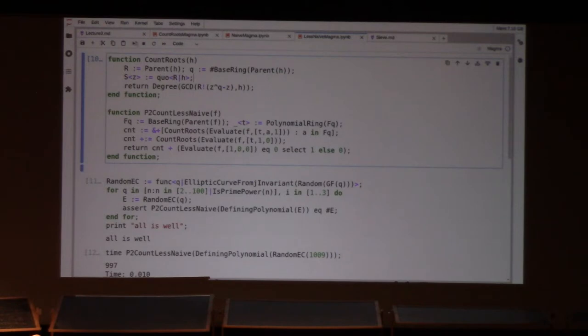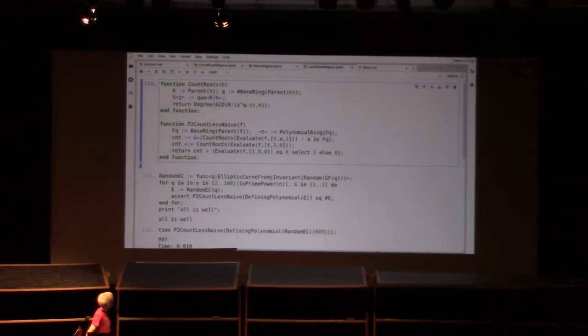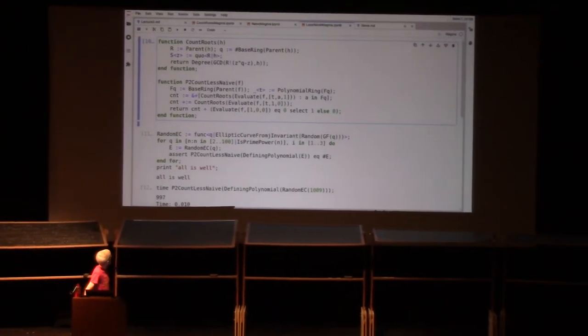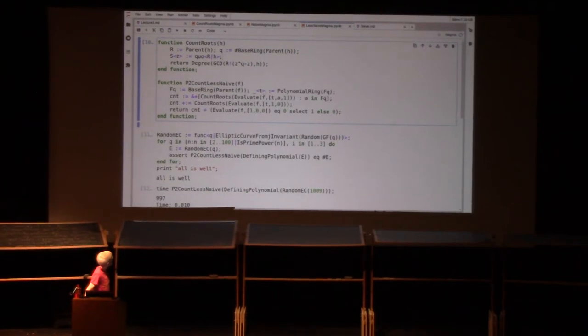All right. So all I've done here is I copied the count roots function. This is just a cut and paste of the other one. In general, you probably want to write this out to a file and load it instead rather than copying it, but it's so short, I decided to copy it. And here's the less naive point counting algorithm. And you can see it starts out the same. It's checking, figuring out what the base ring is that we're working with. It's going to construct the polynomial ring over F_q in one variable, which I'm going to call T. And then for each A in F_q, it's going to evaluate our polynomial F in three variables at T, A, and 1. So T is an indeterminate, A and 1 are constants. And so this is going to produce a univariate polynomial of degree at most three. And then we're going to count its roots using our count roots function. And we're going to sum that over all the A's in F_q. Notice I managed again to use a list comprehension rather than writing a loop.